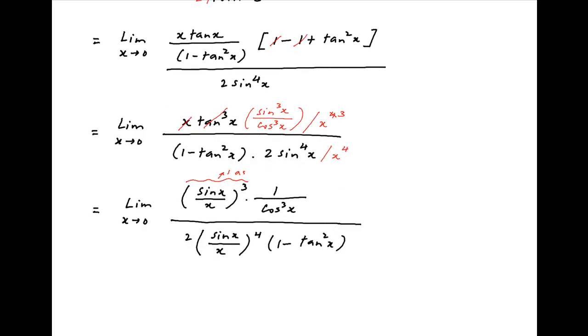Now when x tends to 0: sin x upon x tends to 1, cos x tends to 1, and tan x tends to 0.